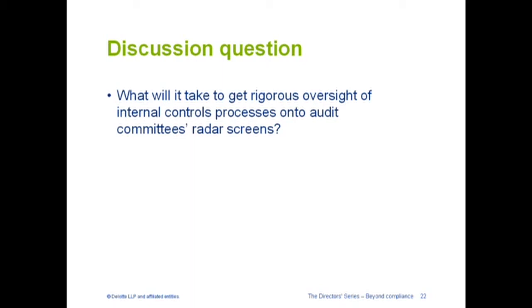There were a number of very important messages there: the importance of accounting estimates and the certification process, the need to tighten up that process, and what really struck me was all the other non-financial information — how good is the disclosure policy around that, and who's watching it? Then clearly the message on data governance, which everyone is dealing with. The question for the audience is: what would it take to get more rigorous oversight of internal controls — or broadly controls processes — onto the audit committee's radar screen?